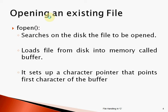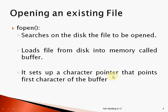Now let's see how to open an existing file. To open an existing file we use the fopen function. What it does: fopen first searches on the disk for the file we want to open. If the file is present, it loads the file from disk into memory, and that memory is called a buffer. Finally, it sets up a character pointer that points to the first character of the buffer. So this pointer variable holds the base address of the buffer where the file is loaded.